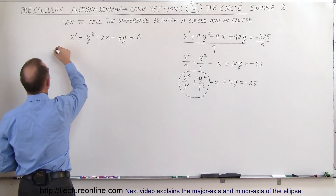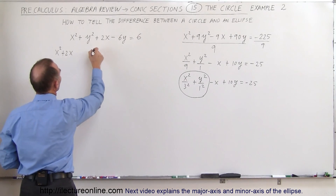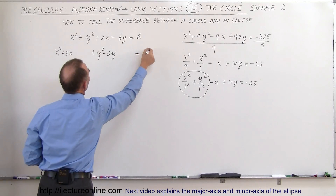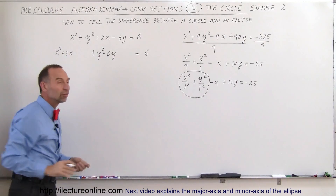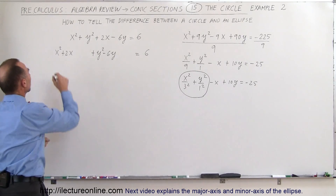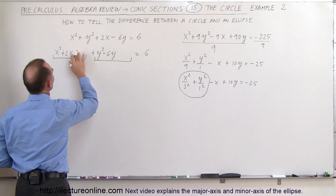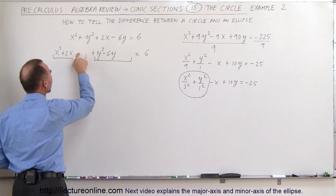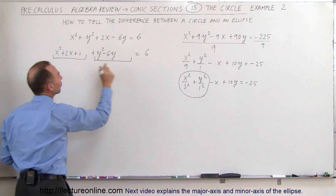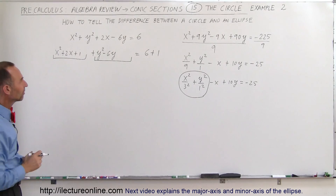So this we're going to write as x-squared plus 2x, and leave some space, plus y-squared minus 6y, and leave some space, is equal to 6 on the right side. Now, to make this into a perfect square — we want this to be a perfect square and we want this to be a perfect square — here we're going to take half this coefficient, square it, and add it over here. So half of 2 is 1, squared gives plus 1, which means we also need to add a plus 1 to the right side to keep both sides equal.